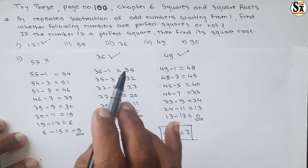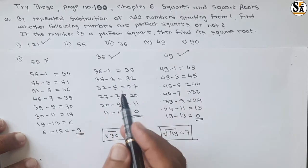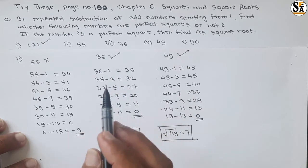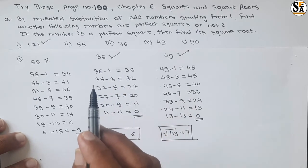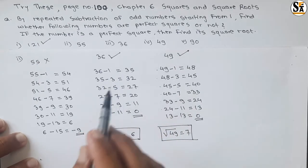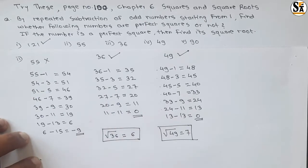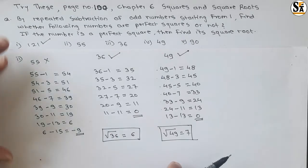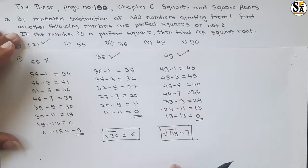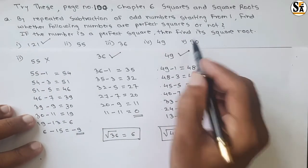Counting the steps: 1, 2, 3, 4, 5, 6, 7 — so the square root of 49 is 7. This is a simple method, useful for small numbers. If you add odd numbers starting with 1, you always get a perfect square, and the count of numbers added is the square root.